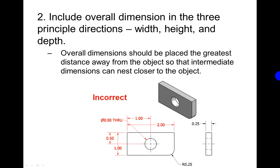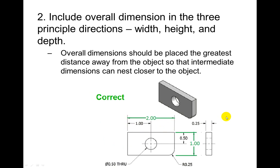Overall dimensions should be placed the greatest distance away from the object so that intermediate dimensions can nest closer to the object. They're showing you here how these smaller dimensions should be closer to the object where this would be farther away. See how these should instead be a little bit farther away from it.